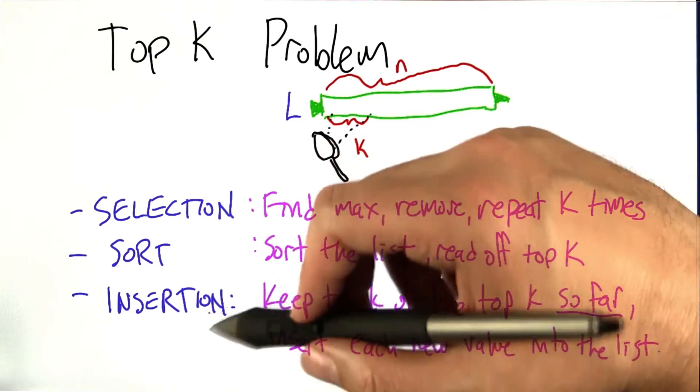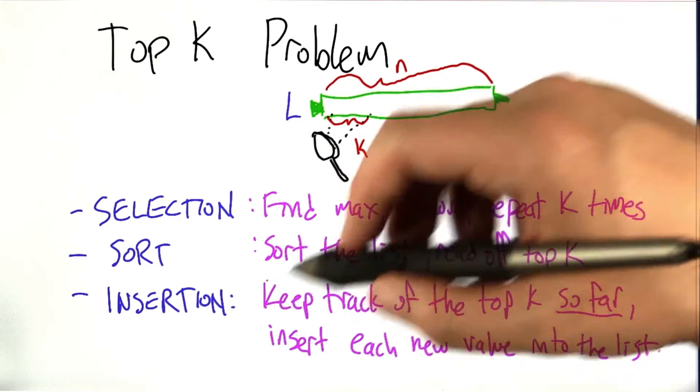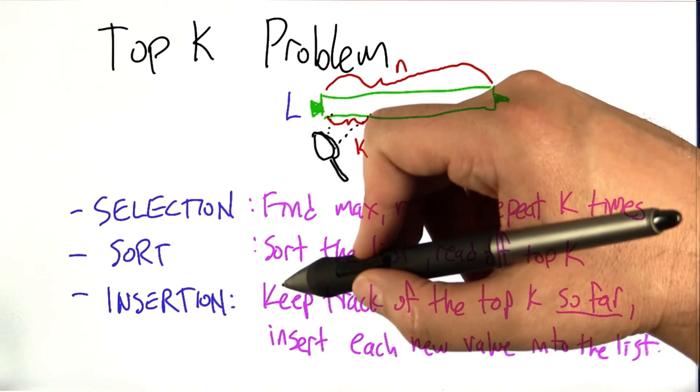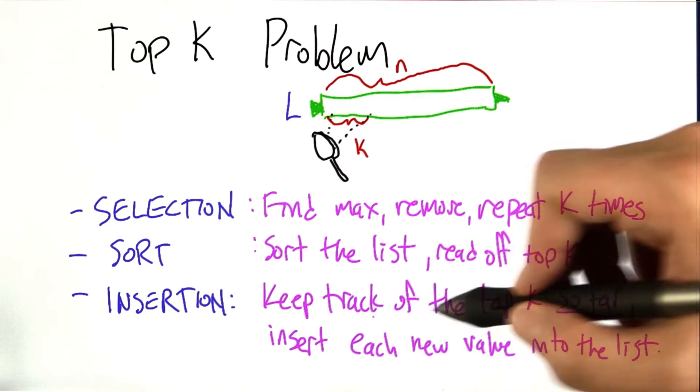Insertion is another strategy. This is the generalization of the solution that I gave for the find the second best example before. In that example, I kept track of both the best and the second best, and then was running through the list.